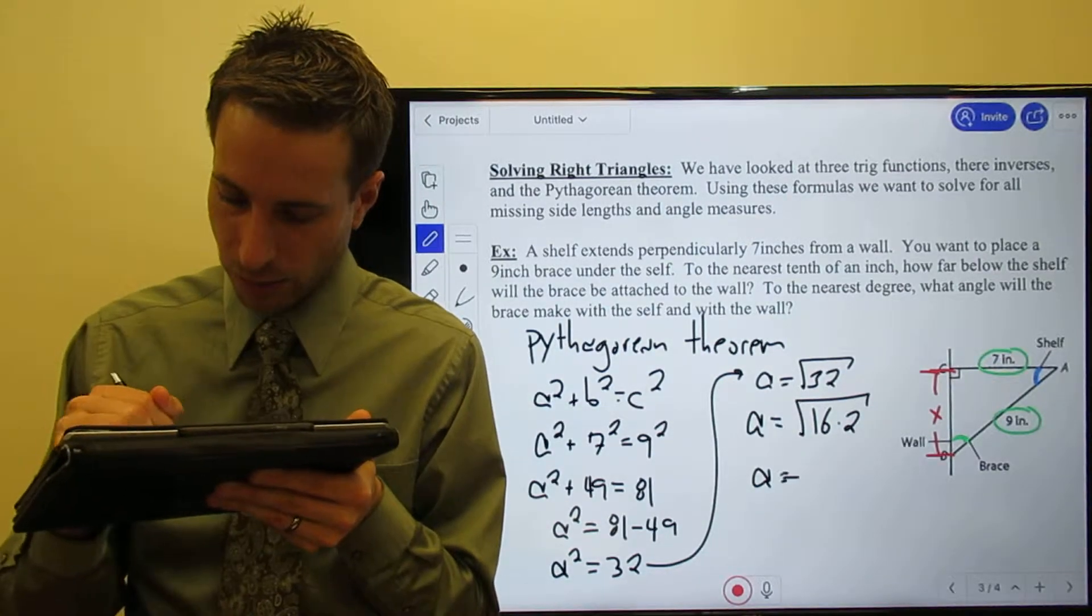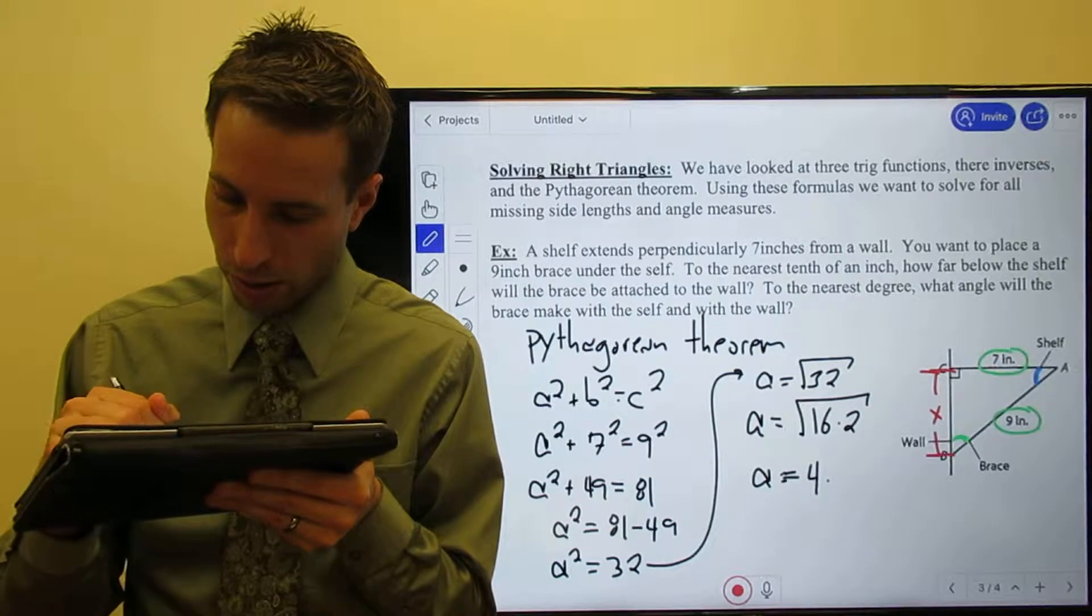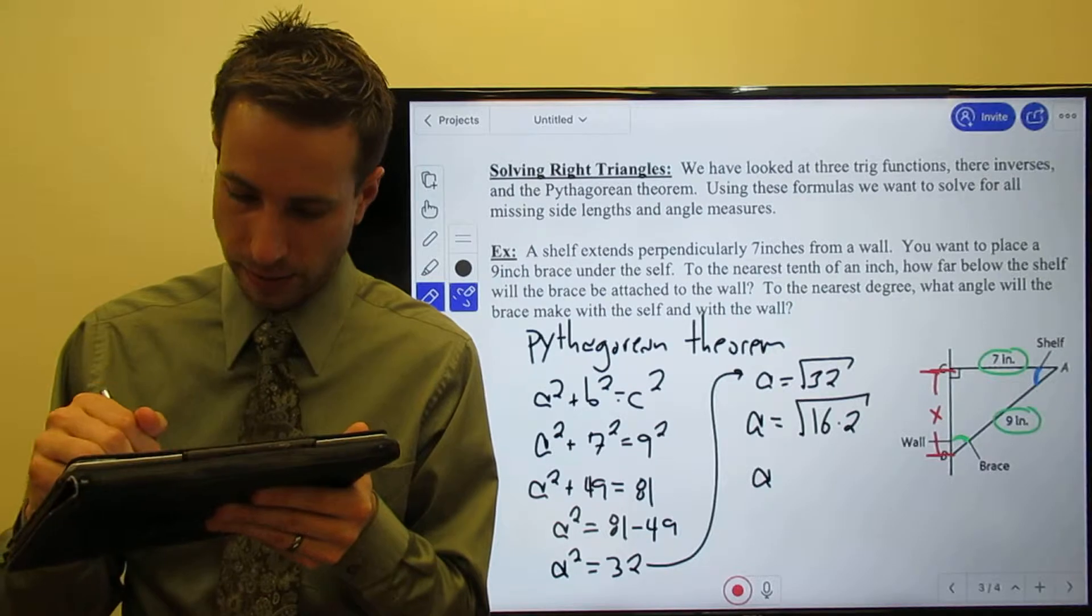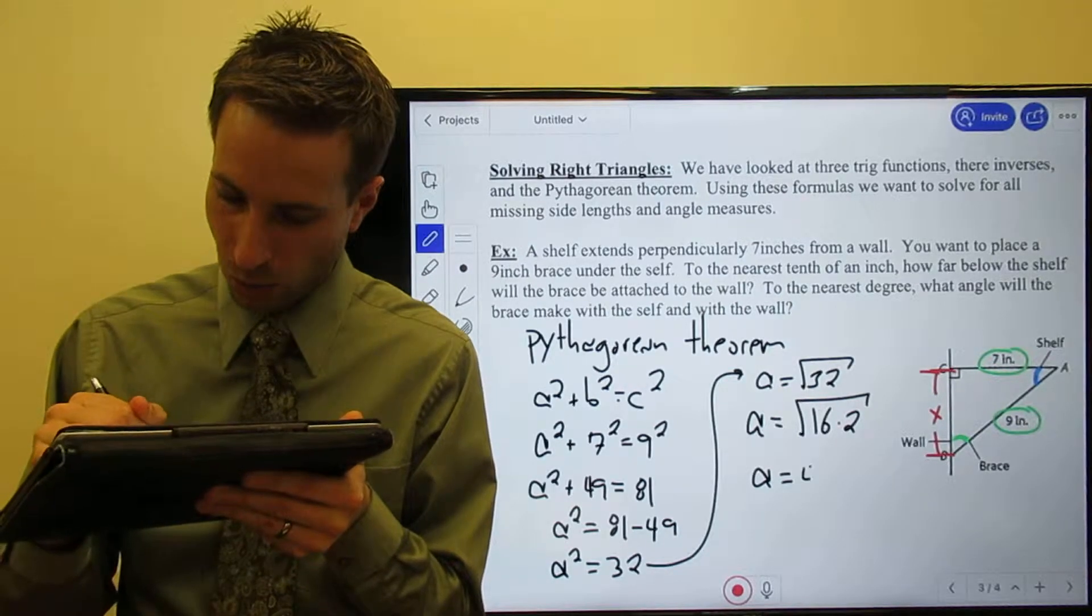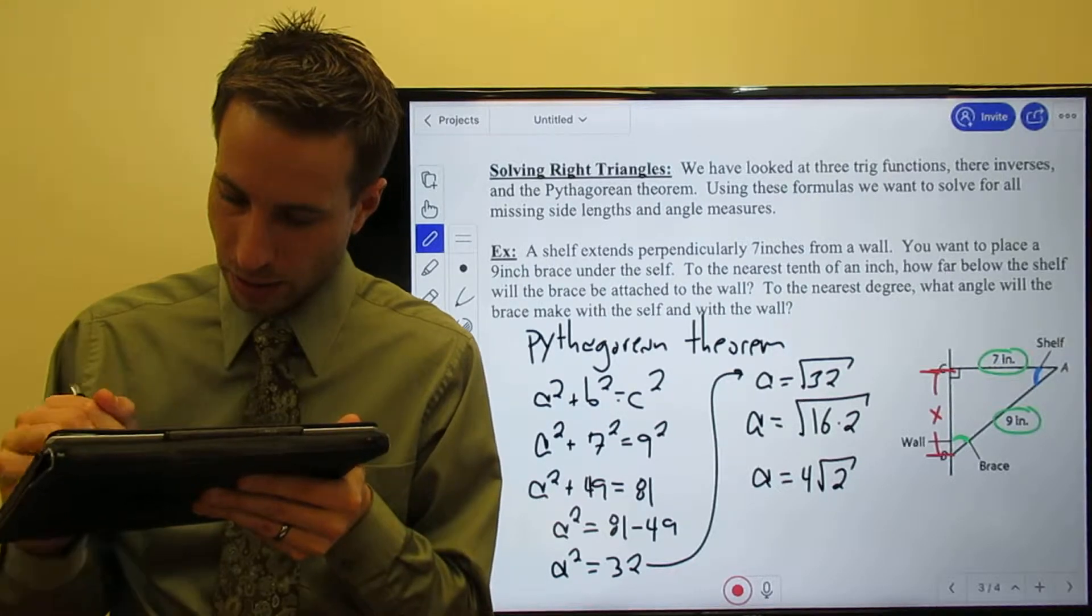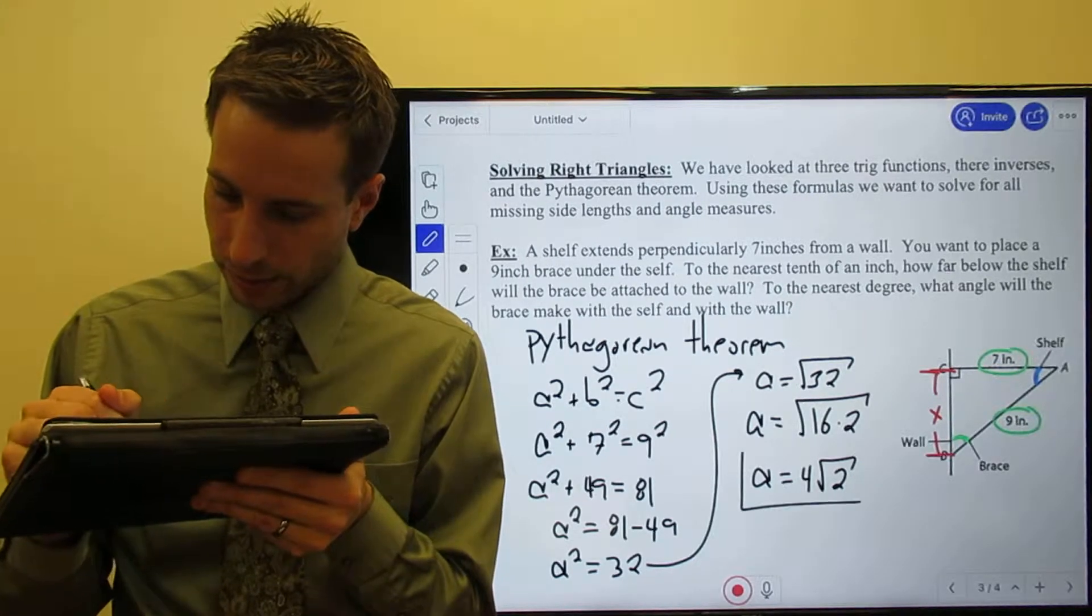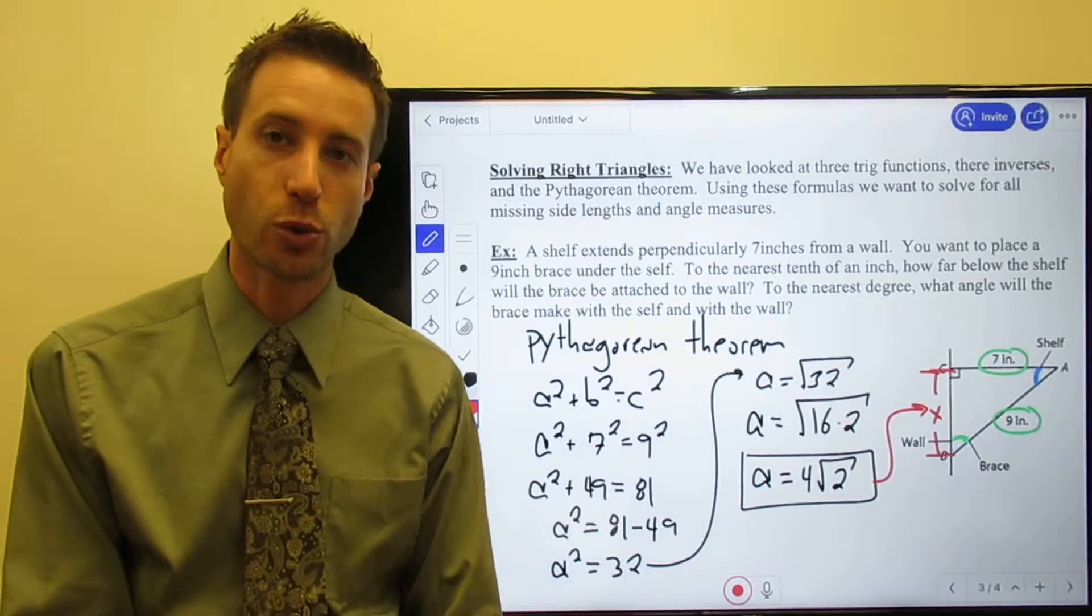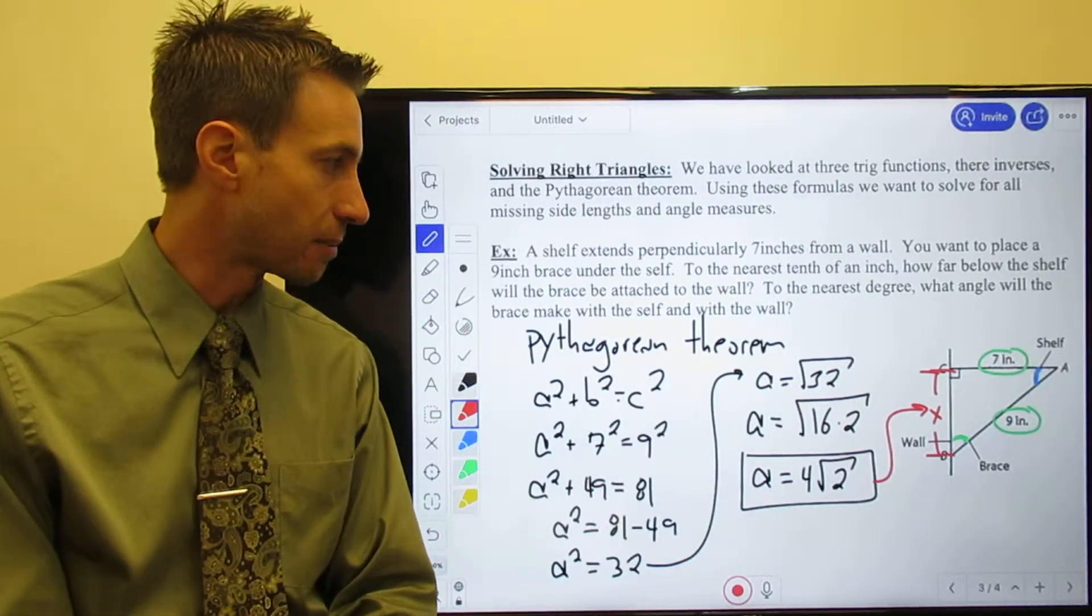A = 4√2, which for us is the length of that side right there. 4√2 - that is completely simplified. I asked you to round to the nearest tenth of an inch, so throw that into a calculator.